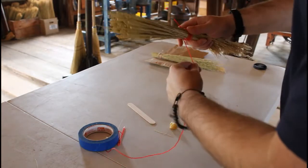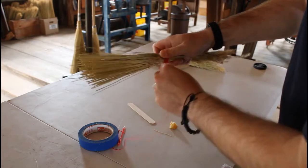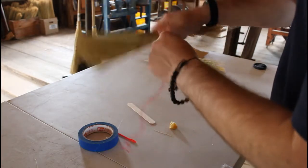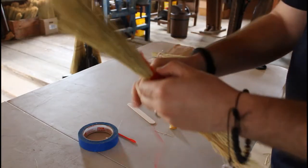And so now what I'm going to do is I'm going to wrap the string around here a couple more times so we get a nice little base going in here. Usually do about five times around. Okay, and you can see I have a little bit of extra string here.